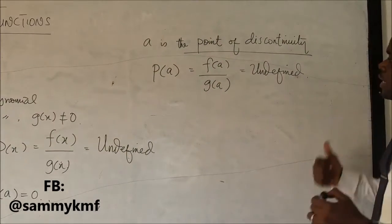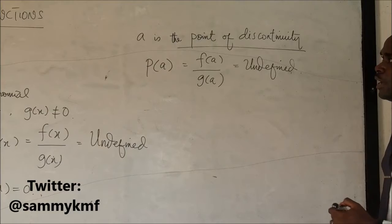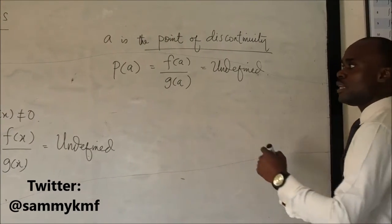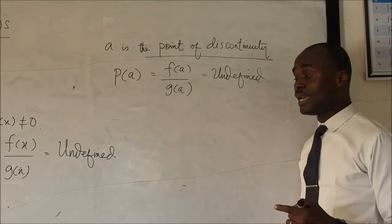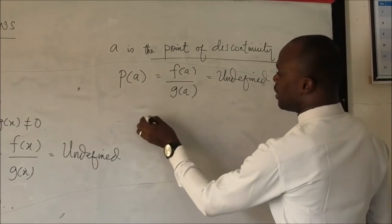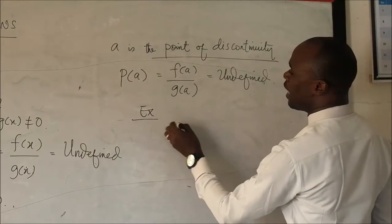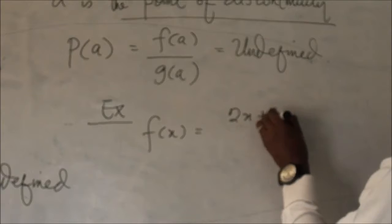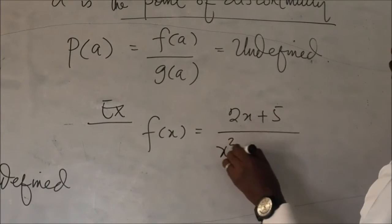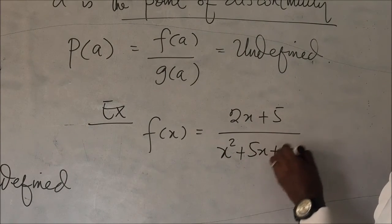So another interesting thing about a rational function is that it is preferable that the denominator is higher in degree. For example, here we have f of x equals 2x plus 5 over x squared plus 5x plus 6.